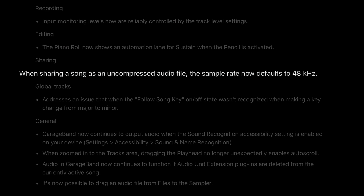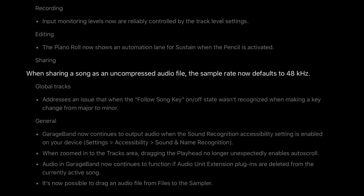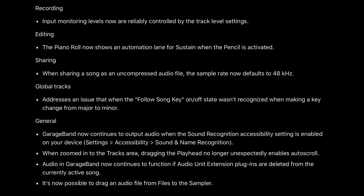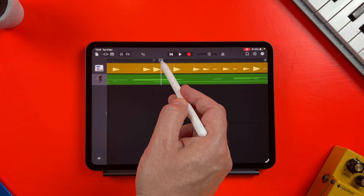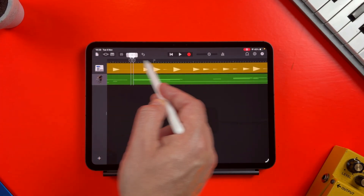A big one here under sharing: when sharing a song as an uncompressed audio file, the sample rate now defaults to 48kHz. Keep that in mind if you're planning to share stems from a project to collaborate with someone else. And in general, when zoomed into the tracks area, dragging the playhead no longer unexpectedly enables auto-scroll.